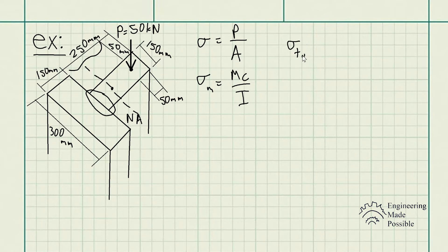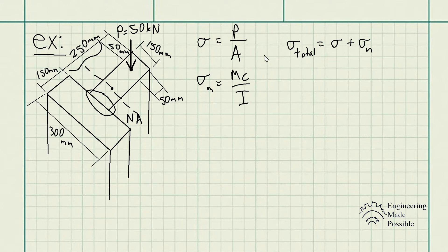The total stress is equivalent to the axial stress plus the bending stress. One thing to keep in mind: for the bending stress, you have both a tensile stress and a compressive stress associated with it. So you have to keep in mind when calculating the total stress whether you're adding the compressive or the tensile stresses — that's one thing to be careful of, as it could lead you to getting the wrong answer.